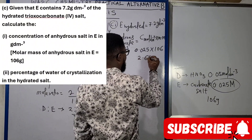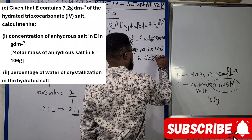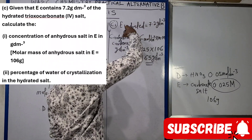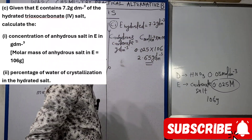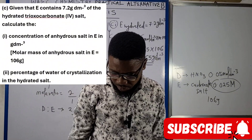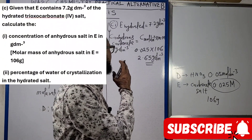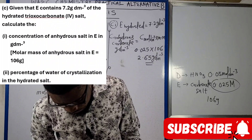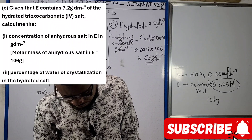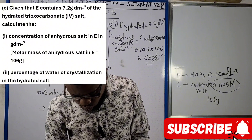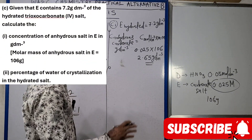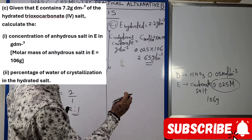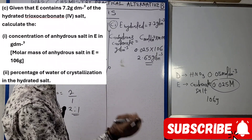0.025 × 106 = 2.65 g/dm³. So the concentration of the anhydrous salt in E is 2.65 g/dm³. Now we move to finding the percentage of water of crystallization in the hydrated salt.